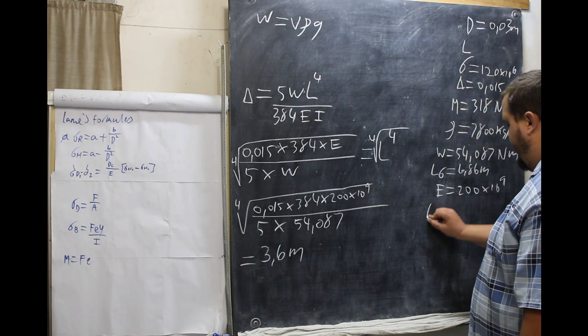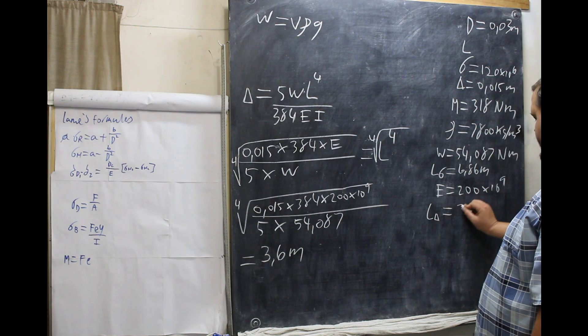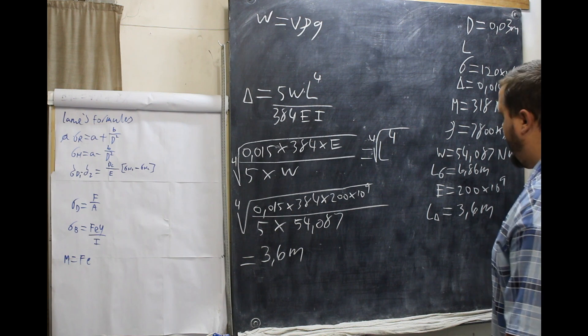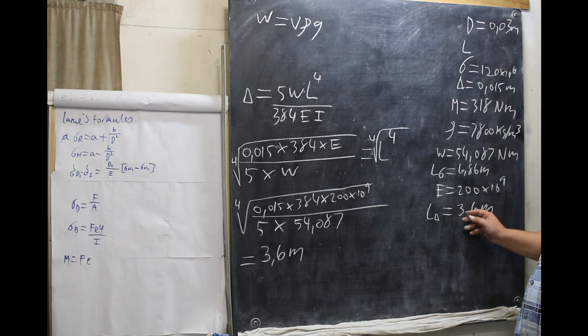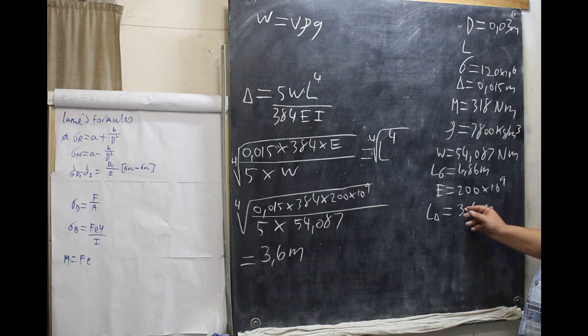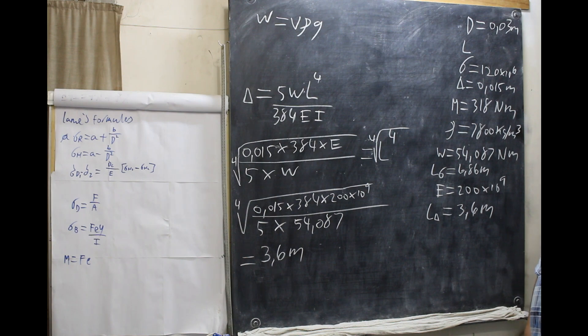So, L with our deflection is 3.6 meters. Now, what we need to realize is that the 3.6 meters is the only one that has both values not exceeding. They do not exceed both values of your deflection or stress. So, that is the true length, is 3.6 meters.